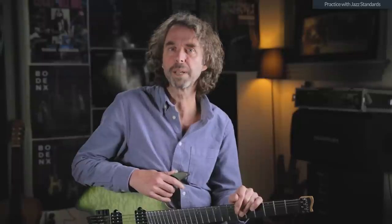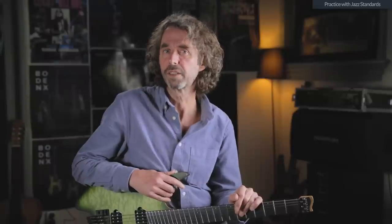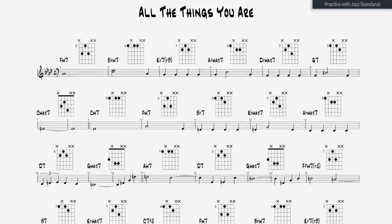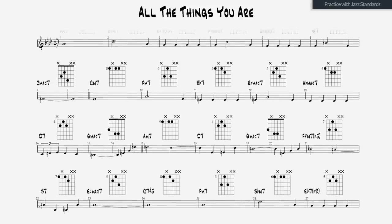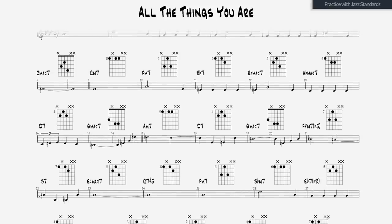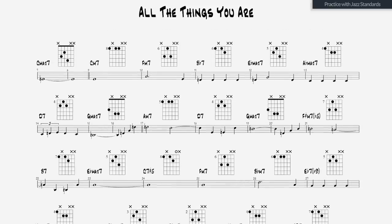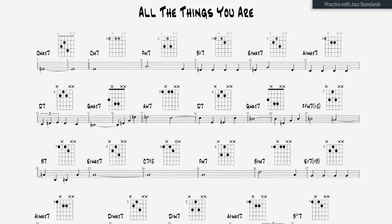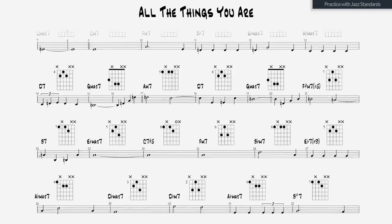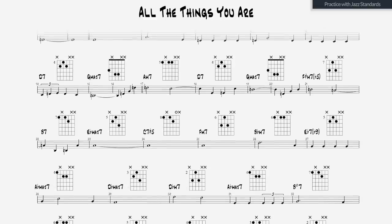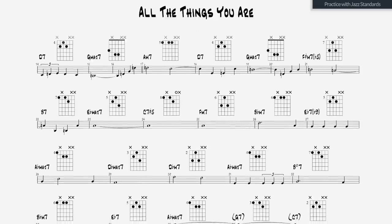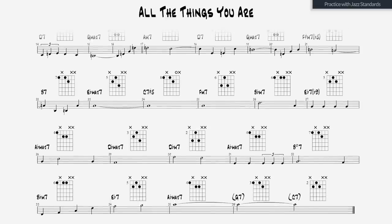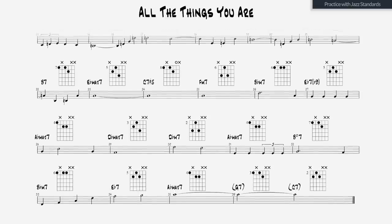The last complex jazz standard is All the Things You Are. This jazz standard was written by Jerome Kern and the lyrics were written by Oscar Hammerstein. The key is A flat major, but the song modulates to C major, G major, E major, and back to A flat major again.